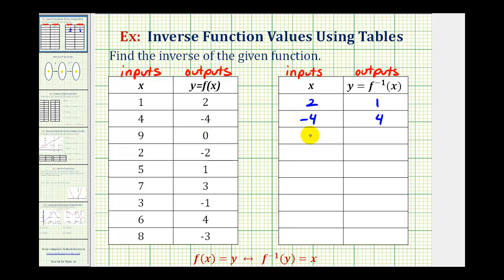So if this is nine, zero, this is zero, nine. If this is two, negative two, this is negative two, two.